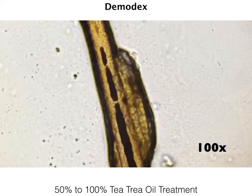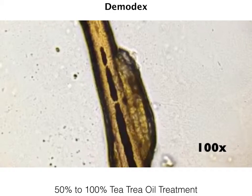Here are the demodex mites at 100 power, and I'm going to flip it up to 400 power. You can really see the mouth parts moving and the legs moving around as well. When the patient saw that, in addition to their eye findings, they definitely took our recommended treatment to heart. What we recommended was 50% tea tree oil. It is possible to use 100% tea tree oil scrubs, but that can be a little bit irritating to the eyes. A lot of journal articles also use 50% tea tree oil lid scrubs. A happy ending to the story is that over time, this patient's symptoms improved.